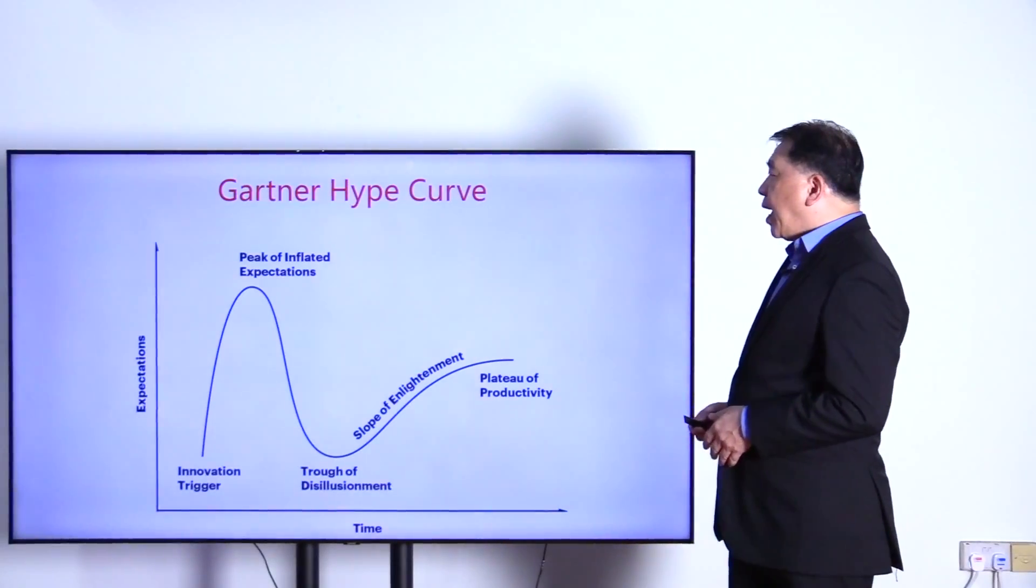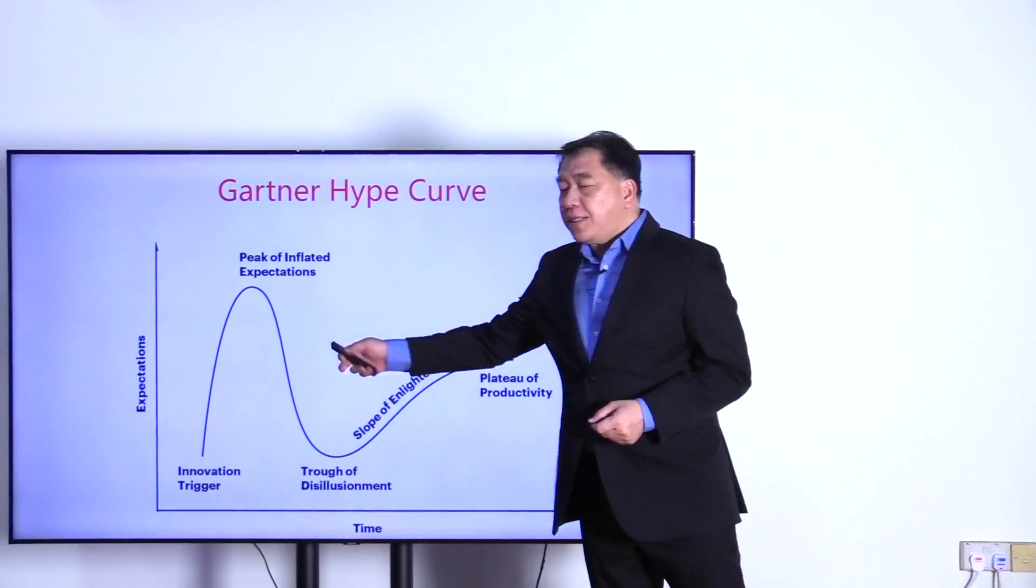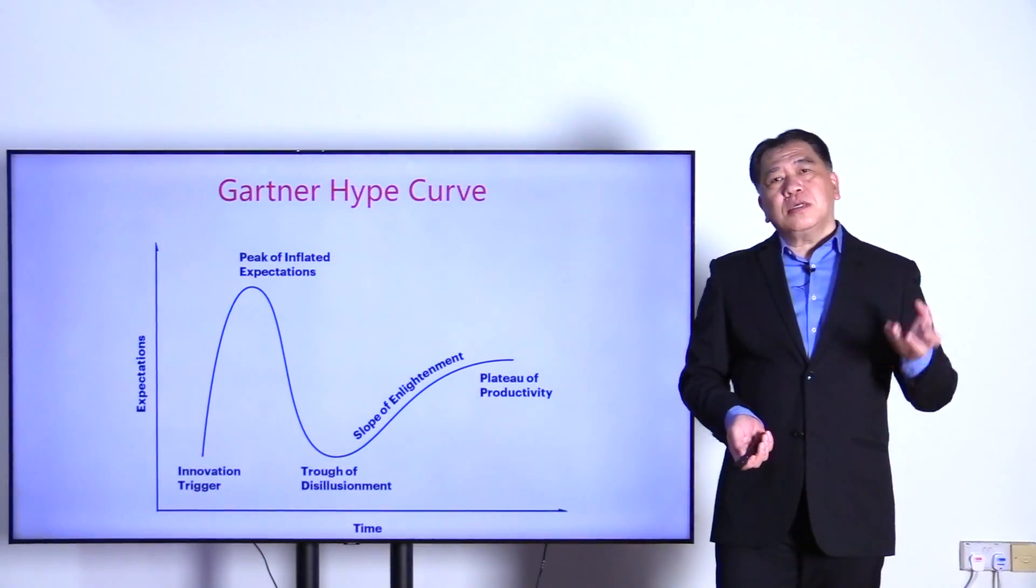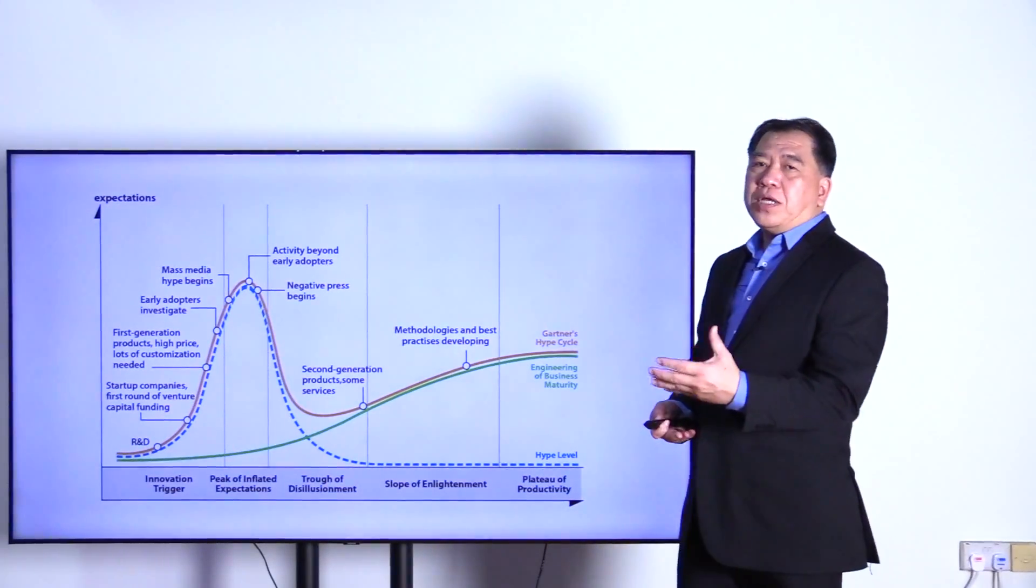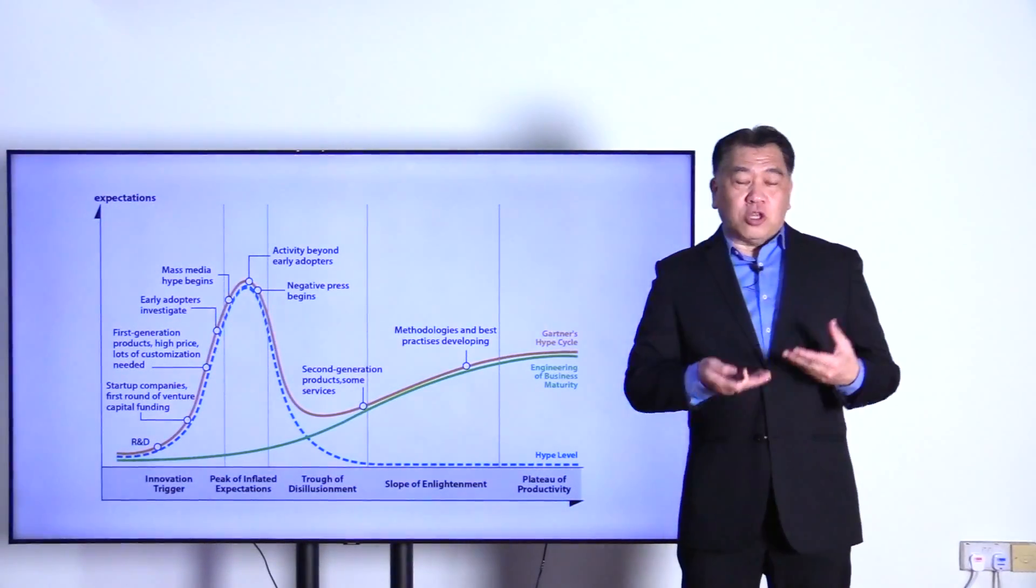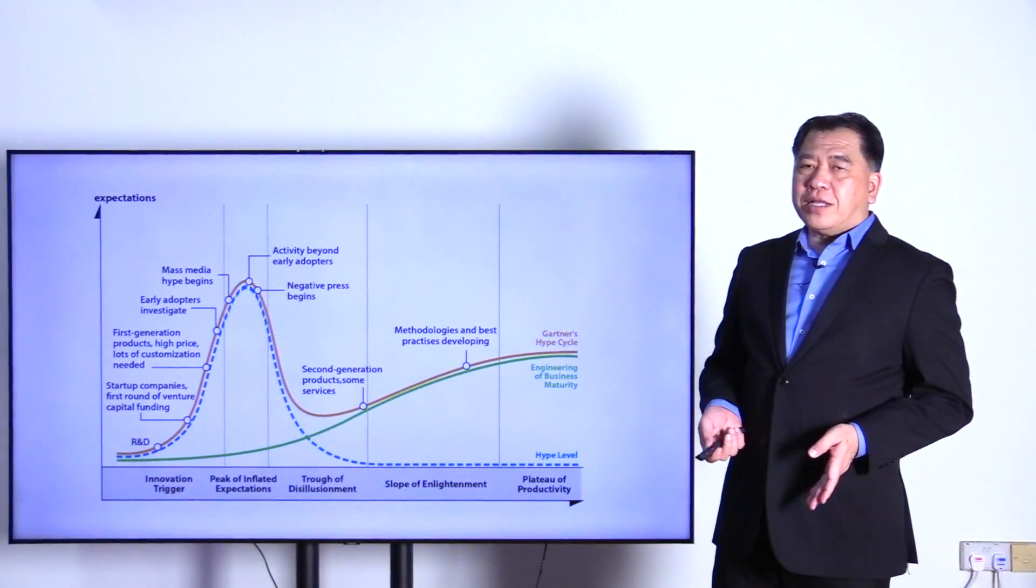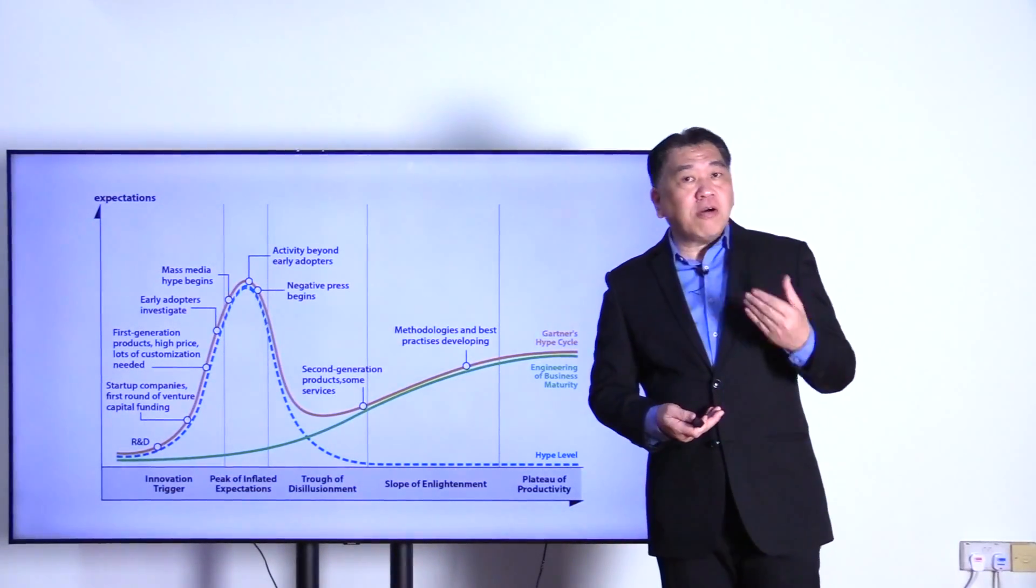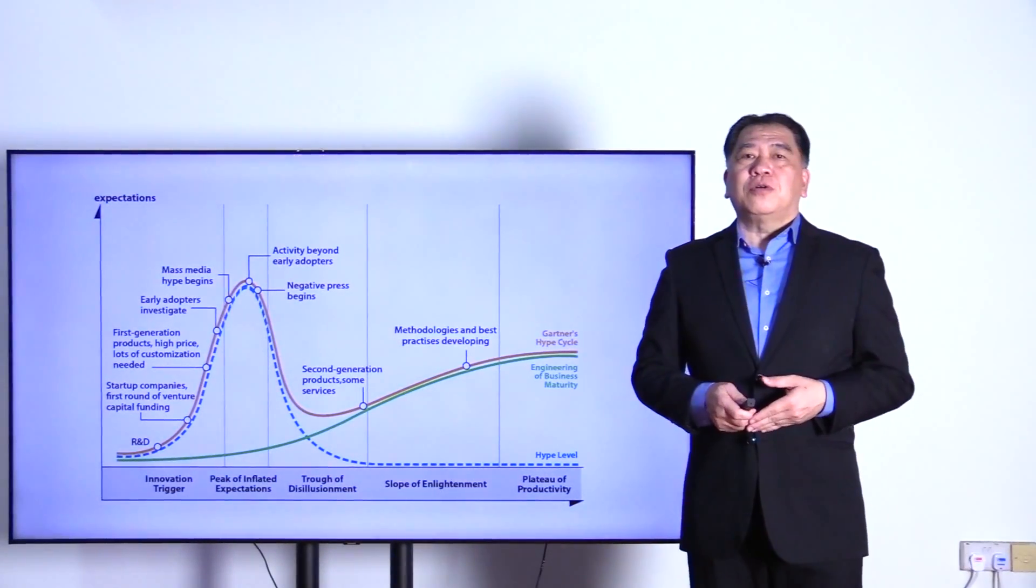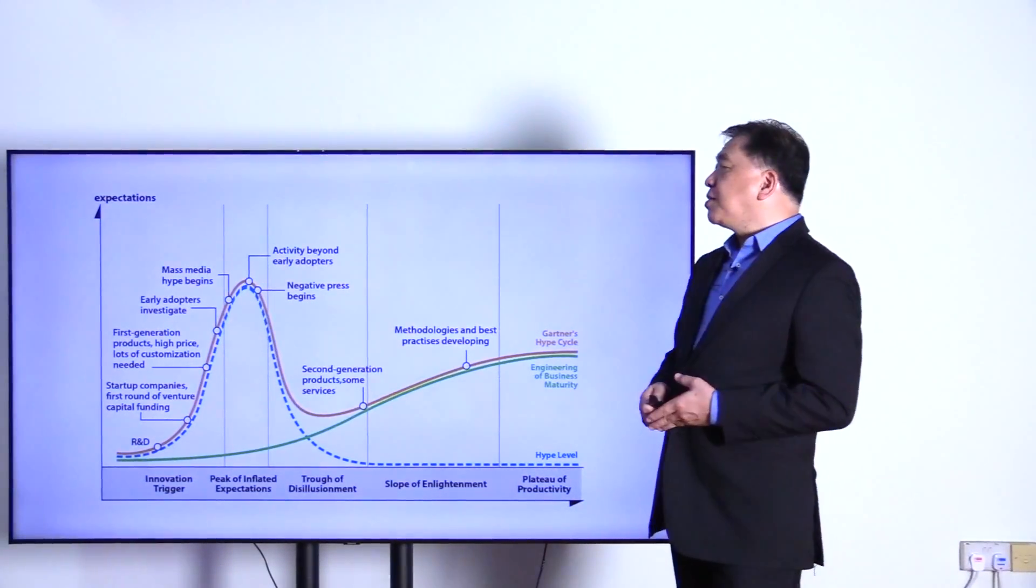Then we look at the hype curve where the S-curve is still there but there are irrational exuberance. When there's an innovation trigger, people just go into it and there are many examples: dot com, blockchain, AI, 3D printing. It's a phenomenon that will happen in all emerging technologies, so we've got to be very careful in identifying the hype.